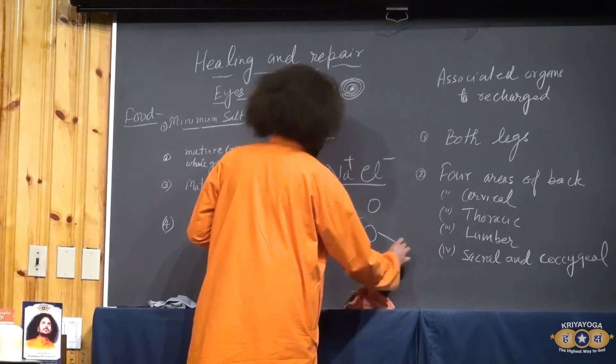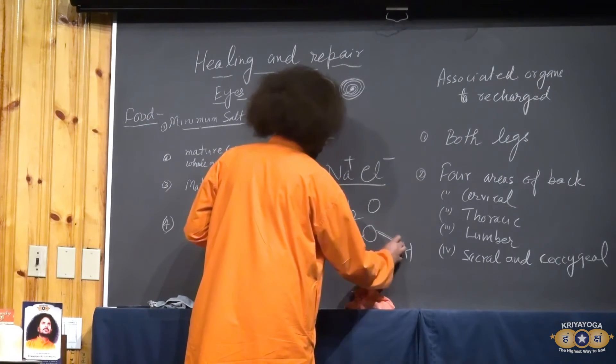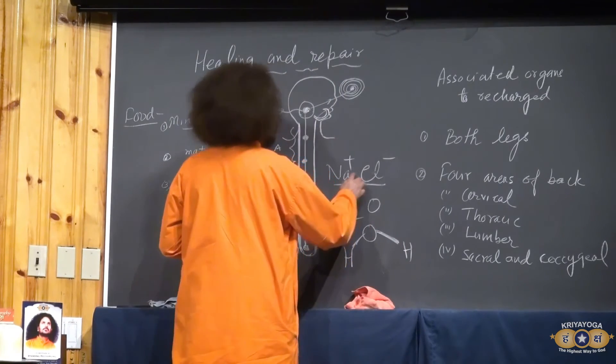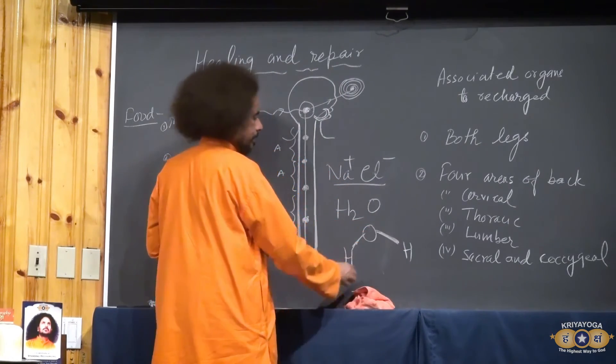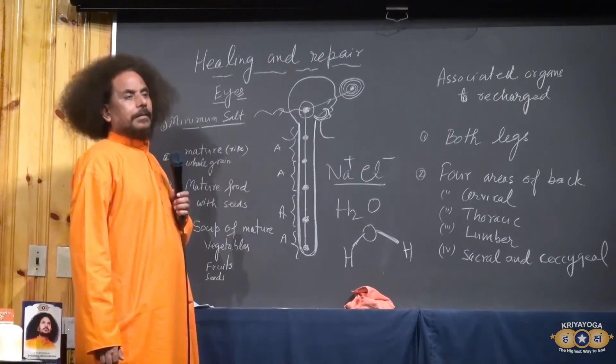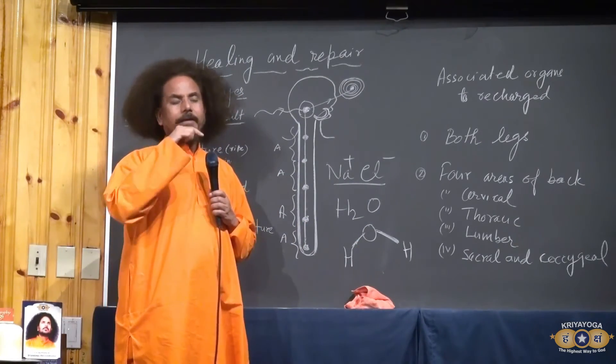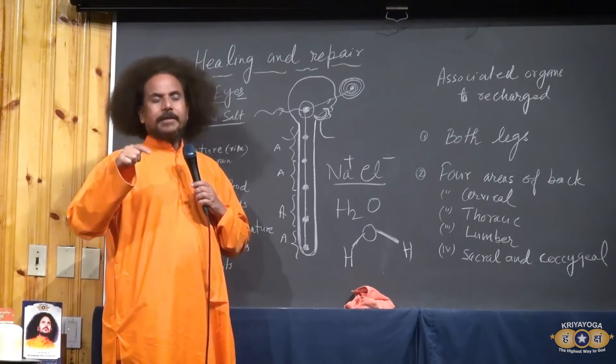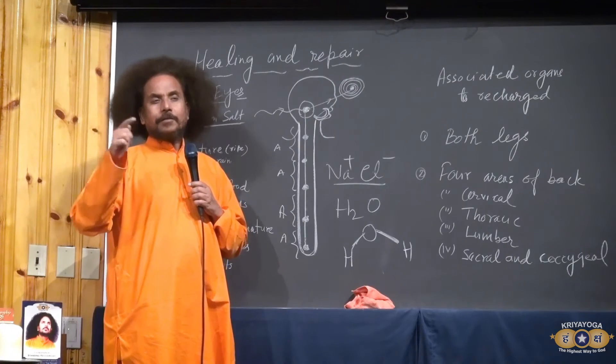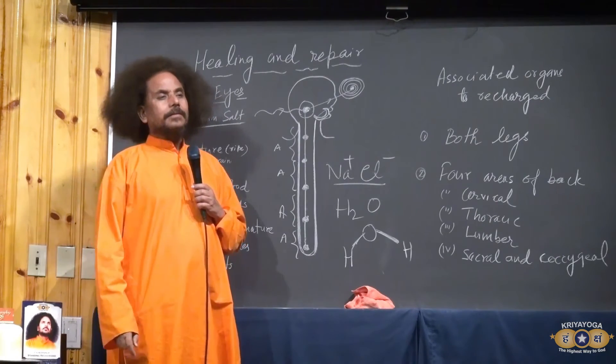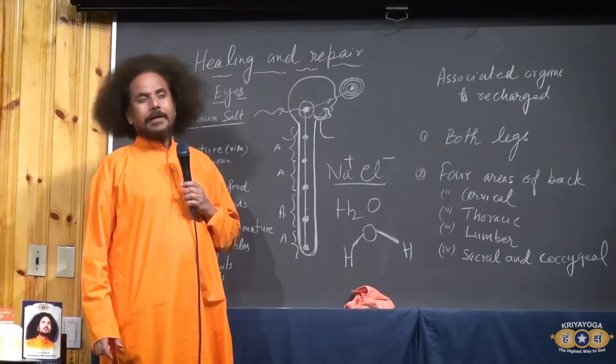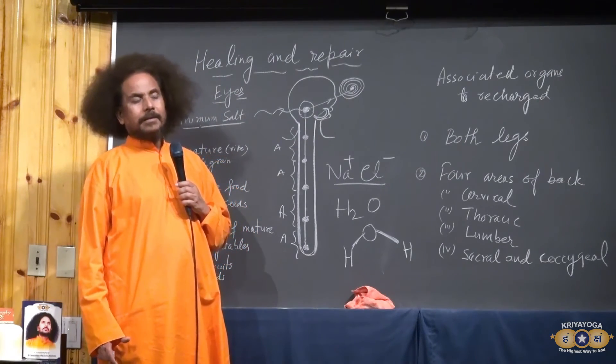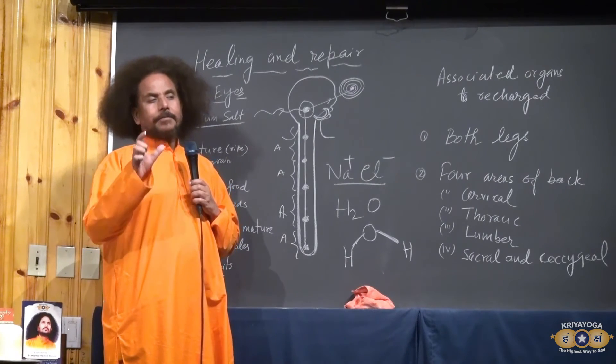This bond is called the covalent bond. It is not polarized. Therefore, the husk of any grain, husk of the lentils and wheat berry, corn and brown rice. You will find what is the brown color. That is having all minerals. You will find plenty of sodium, plenty of chloride, potassium, everything. But they are in covalent form.